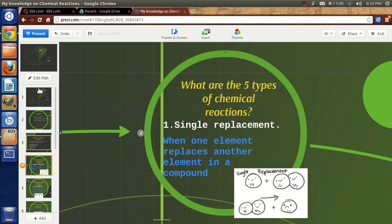First of all, the single replacement. The single replacement is when one element replaces another element in a compound. Here you can see the examples.